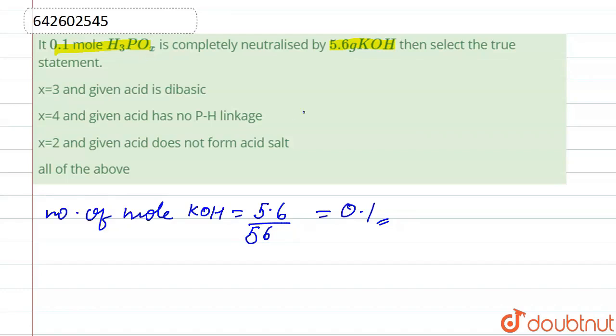The value of x may be 4, 3, or 2. So the compounds are H3PO4, H3PO3, and H3PO2. It is phosphoric acid, phosphorous acid, and hypophosphorous acid.